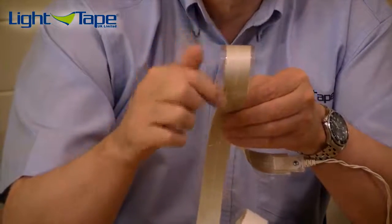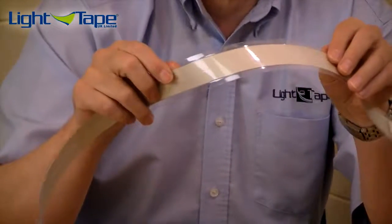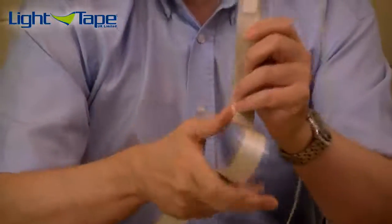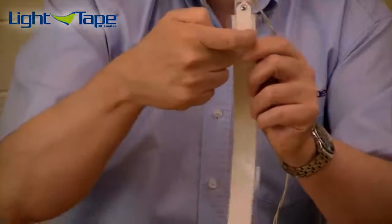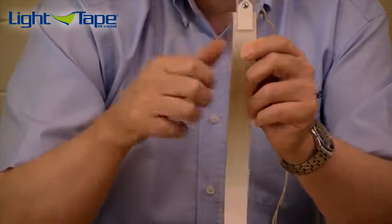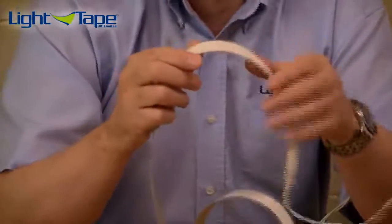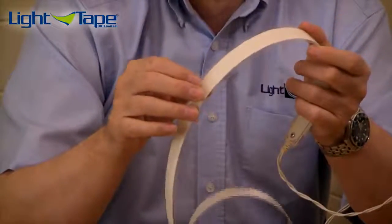This is because light tape uses what's called split electrode technology. Effectively, what we're doing is we're putting a current to either side of this score line which is actually charging and vibrating the phosphors. When the phosphors vibrate, that's what creates the light.